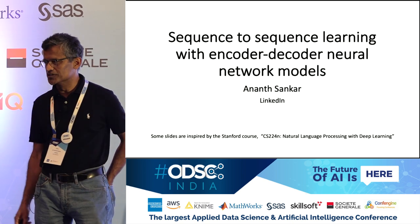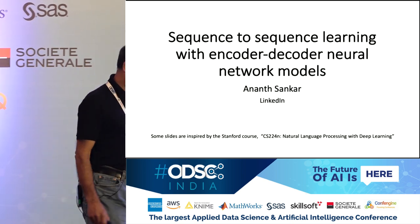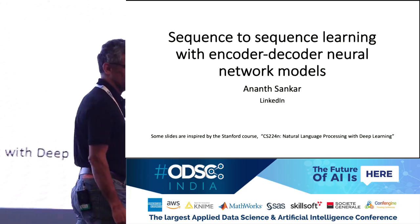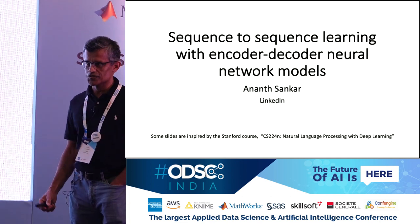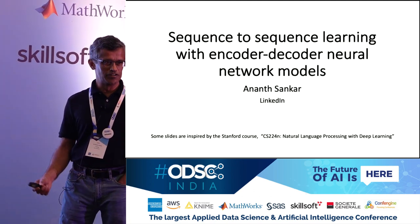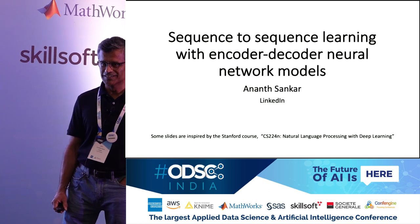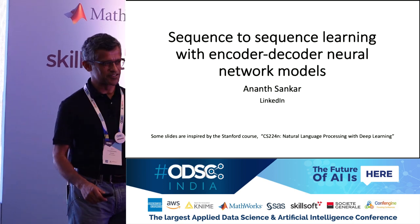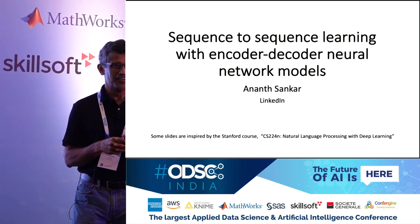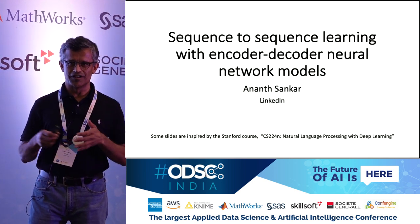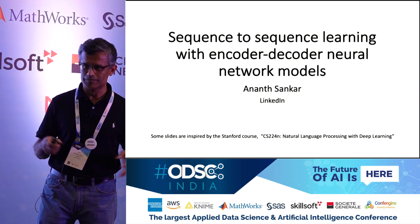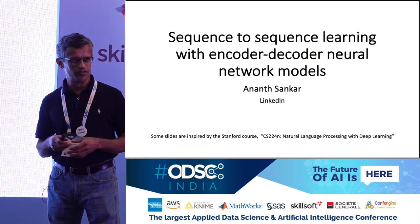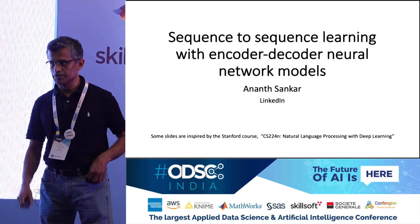I'd like to start with just a brief personal history. I did my PhD in 1991 at Rutgers University, and at the time I was working on neural networks. I would consider that the first phase of the current wave of neural networks. In the 80s and 90s, neural networks was a hot area, and I was doing my PhD in neural nets.